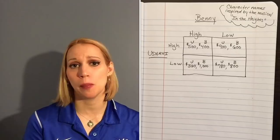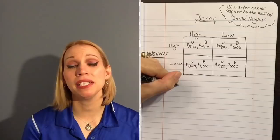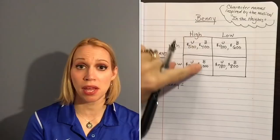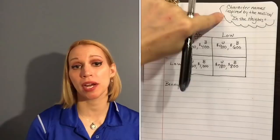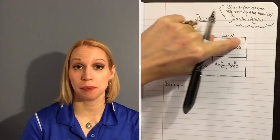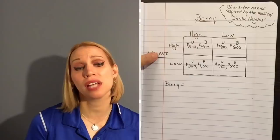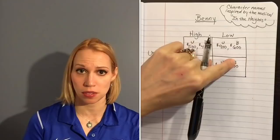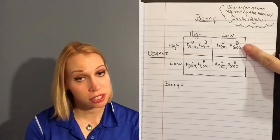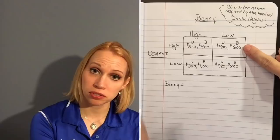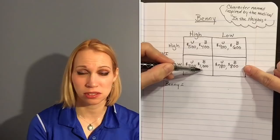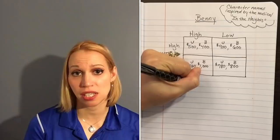Let's see if Benny has a dominant strategy. If Benny prices high and Usnavi prices high, Benny earns $400. If Benny prices high and Usnavi prices low, Benny earns $1,000. If Benny charges low and Usnavi charges high, Benny earns $600. If both charge low, Benny earns $800. So if Benny pursues a low price strategy, he gets $600 or $800. Six hundred is better than $400, but $800 is not better than $1,000. So Benny does not have a clear dominant strategy.